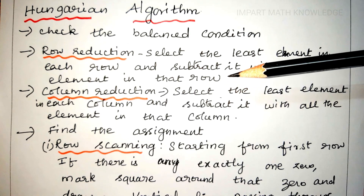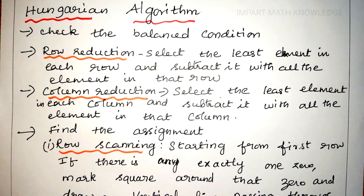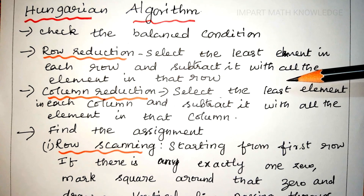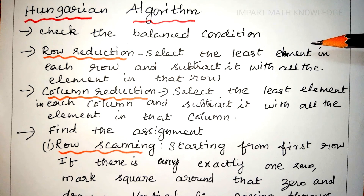Next, you go for row reduction. Identify the least element from each row and subtract it from all the elements in that row. Then, perform column reduction: in the reduced matrix, identify the least element from each column and subtract it from all the elements in that column.